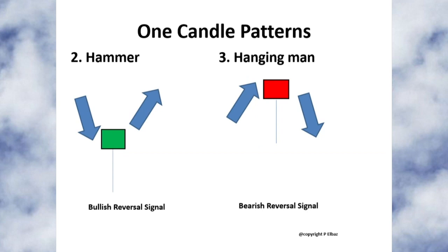This moves us on to hammer and hanging man patterns, where the doji gains a body. On hammers, you have to have a very small body — the open and close are not too far from each other. What it tells us is that the down move wasn't carried on; you've got the move on the close to the upside towards the top — a reversal. After a hammer, I'd like to see a bullish candle to give me confirmation. Even though I've shown the hammer in green and the hanging man in red here, you can actually have a hanging man with a green candle. In any case, the hanging man would be a bearish reversal.